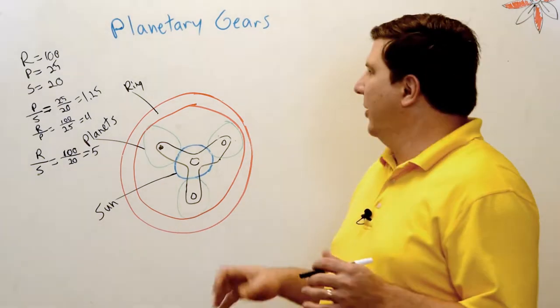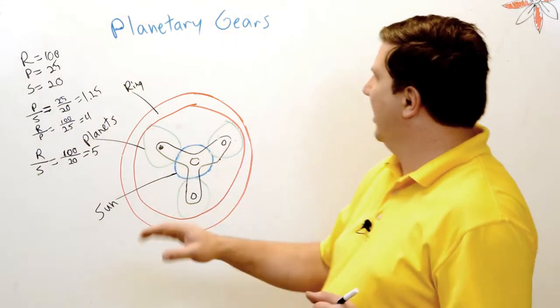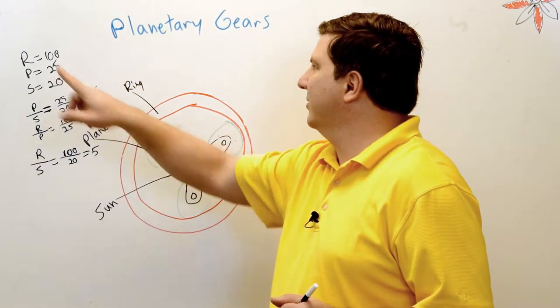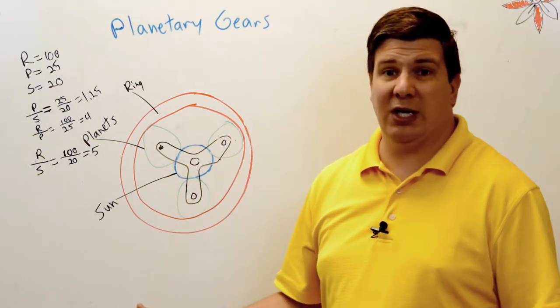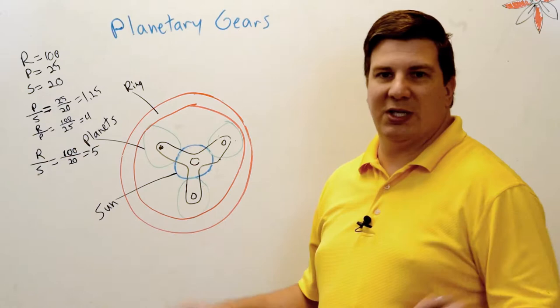Let's give a great example. First we'll set some numbers. I'm saying that my ring gear has 100 teeth, my planets have 25, and my sun has 20. I have no idea if you could physically put them together and actually make them do that, so we're gonna use those anyway and make sure they work.